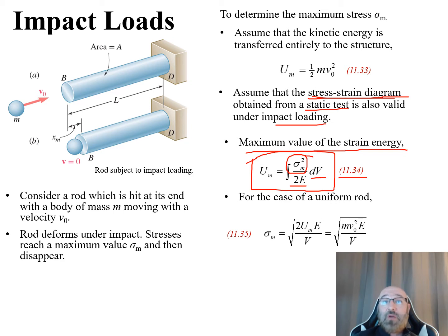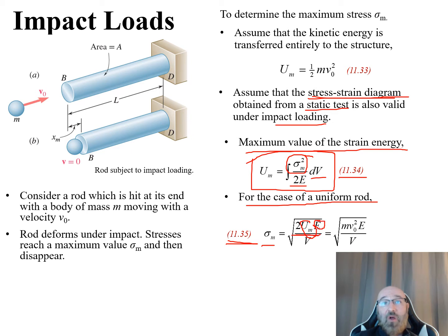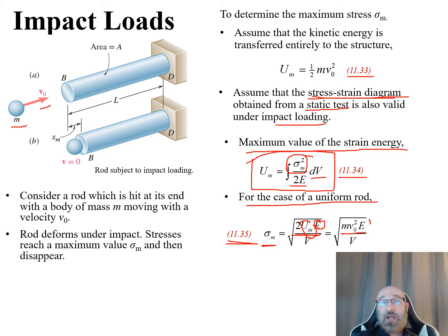Another assumption is that the stress-strain diagram from a static test is also valid under impact loading. With these assumptions, equation 11.34 gives U_M equal to the integral of σ_M² over 2E dV. Rearranging for a uniform rod gives equation 11.35: σ_M equals the square root of M·V₀²·E all over V. This is our maximum stress.